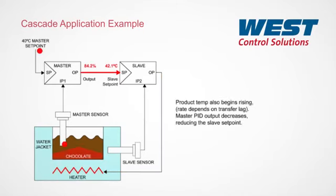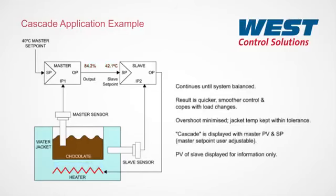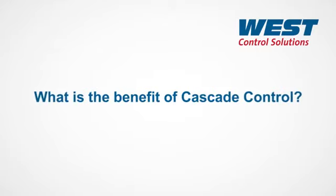This lag makes temperature overshoot or unstable control more likely. As a result, cascade control can be used to improve control performance. The master controller measures the chocolate temperature and feeds the set point to the slave, which monitors and heats the water as required. If the temperature of the chocolate is rising too fast, the set point is reduced to the slave and the controller can then vary the heat applied accordingly. Temperature control performance is improved due to faster responsiveness, resulting in minimized overshoot and less fluctuation in control.